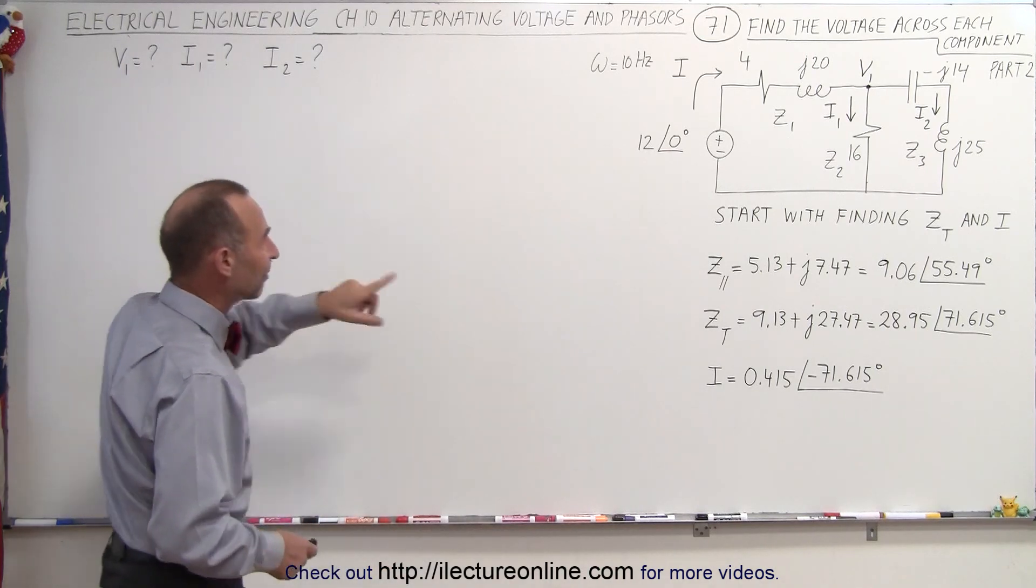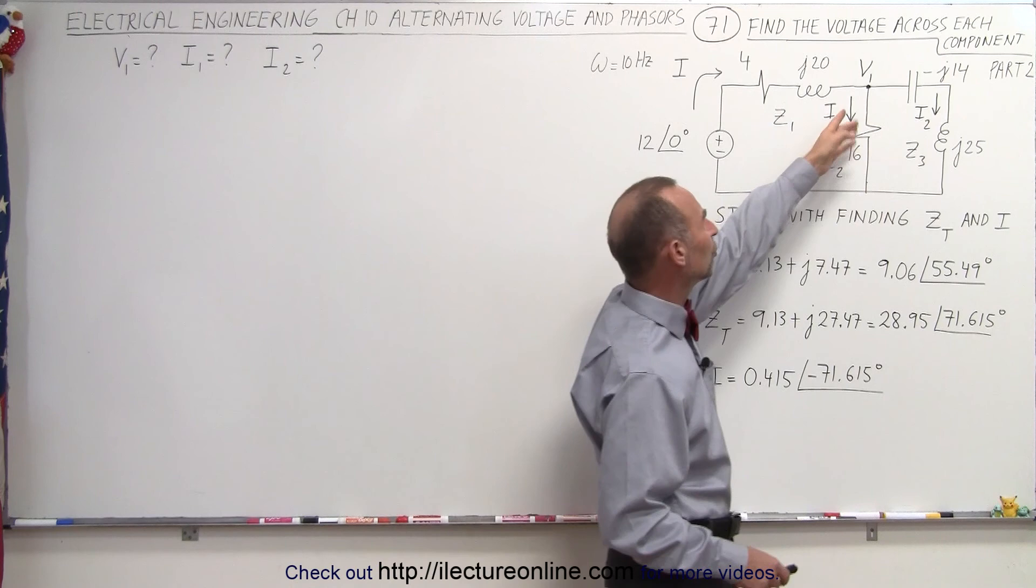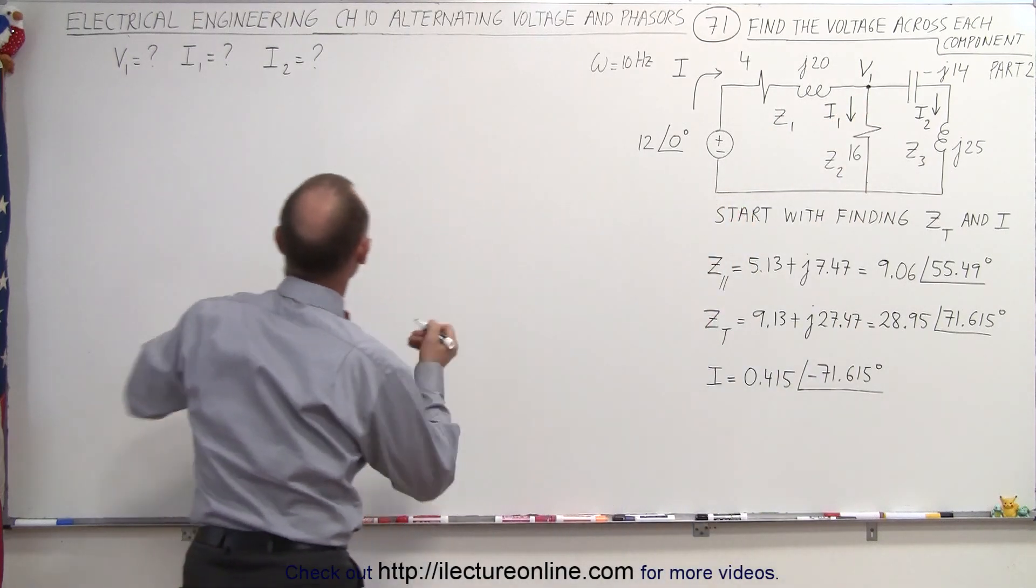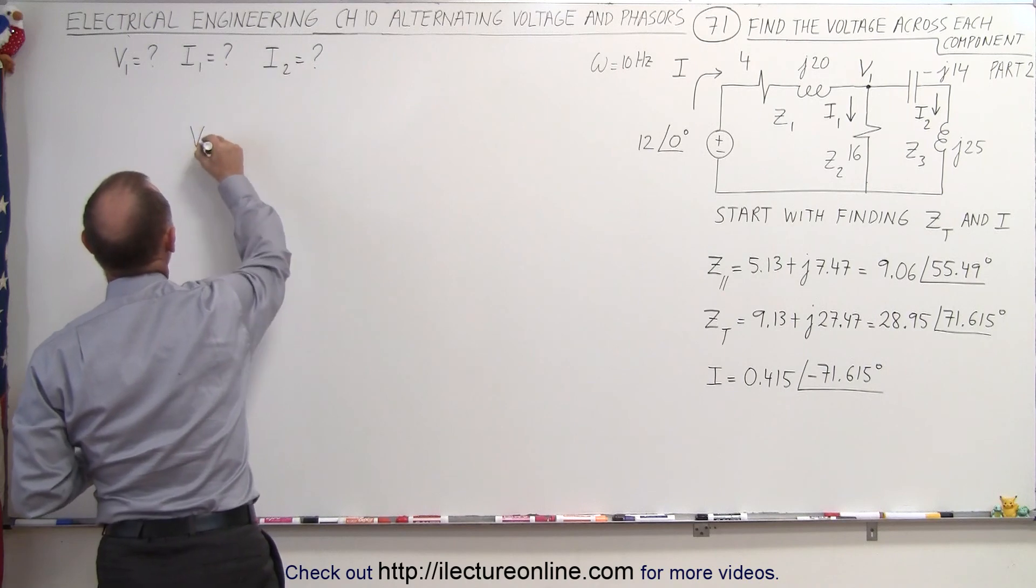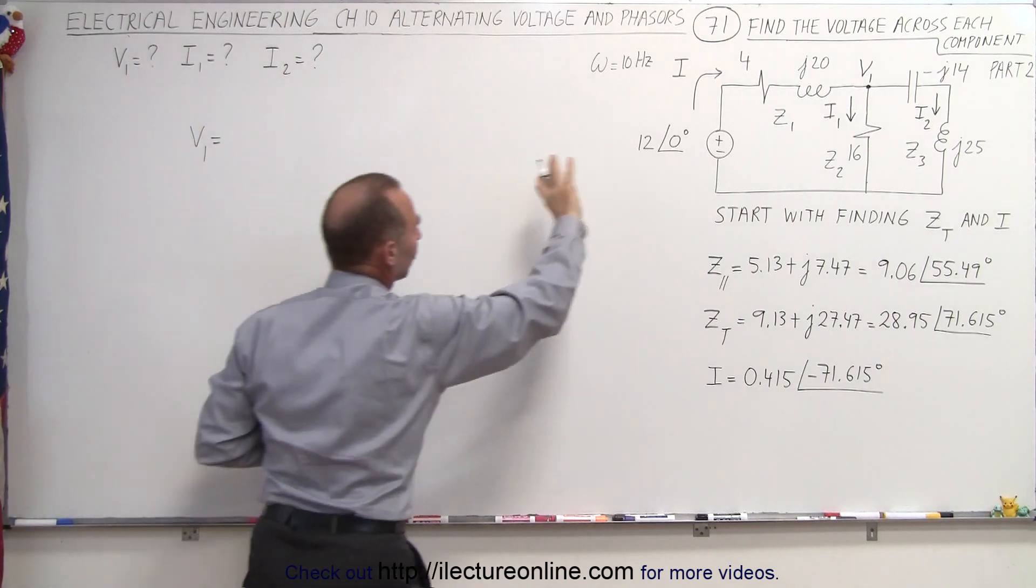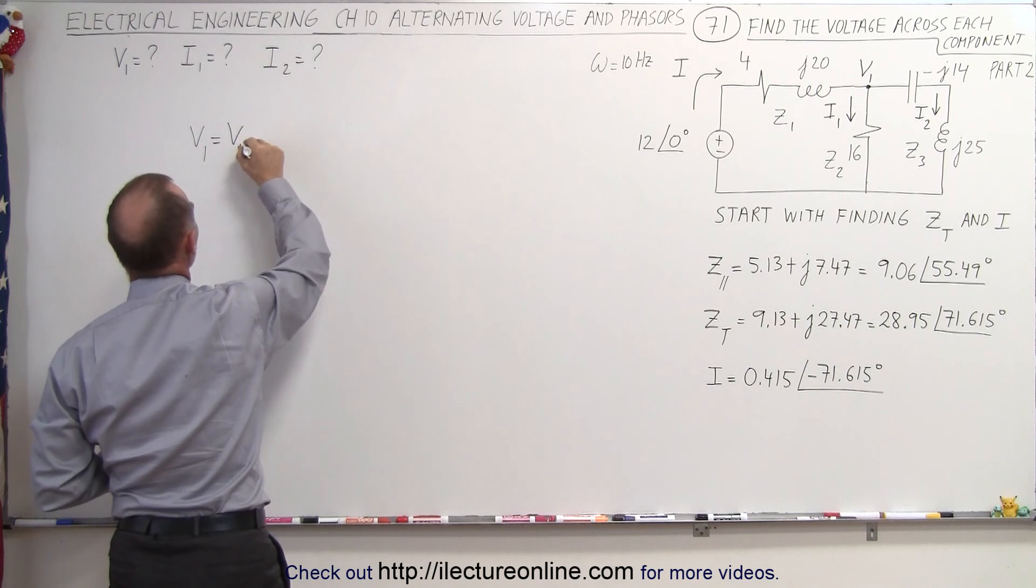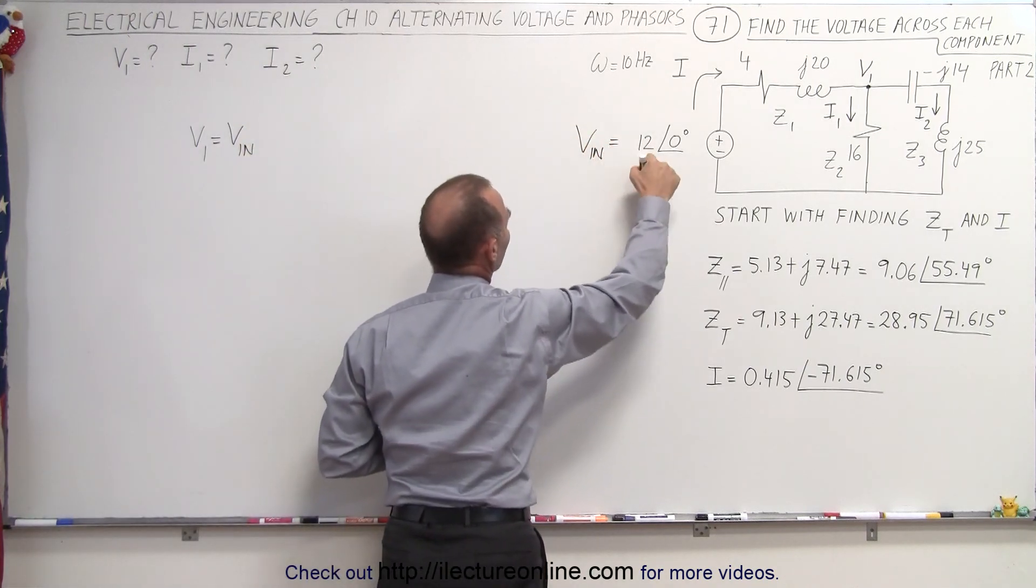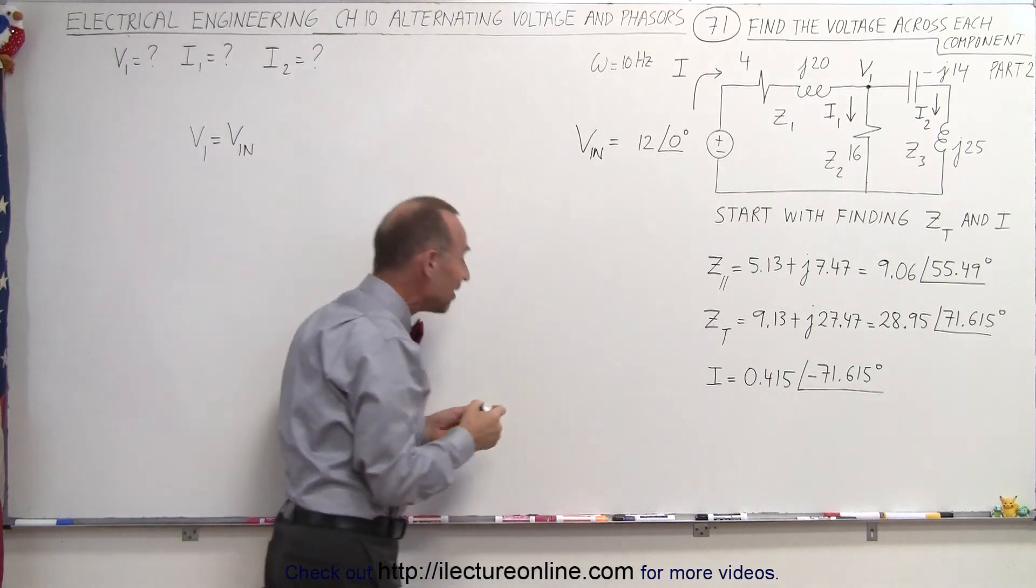Well, let's start with the voltage at V1, and what we're going to do is use a voltage divider combination. So what we're doing here is say that V1 is equal to the input voltage on the circuit, so let's call that V input, and the input voltage is right here, so V in is equal to 12 volts with a zero degree phase angle